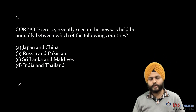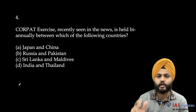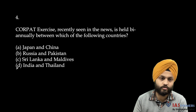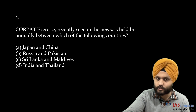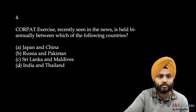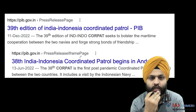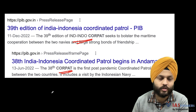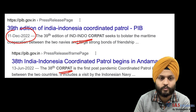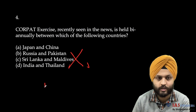Moving to question five: a CORPAT exercise recently in the news is held bi-annually between which two countries? The answer is India and Indonesia — not India and Thailand, so that option is wrong. The 38th/39th India-Indonesia Coordinated Patrol was held, with dates showing approximately a six-month gap, confirming it is bi-annual. The correct answer is India and Indonesia.